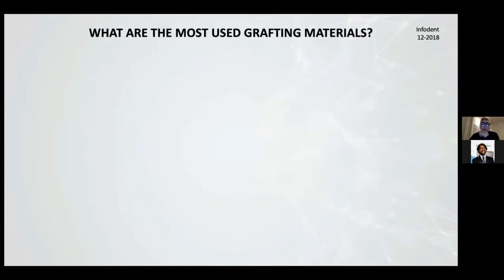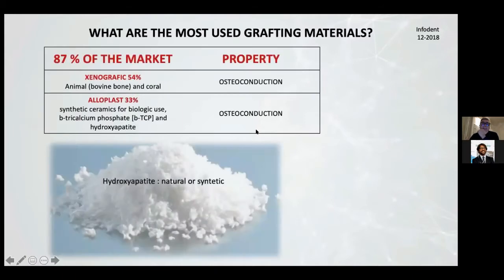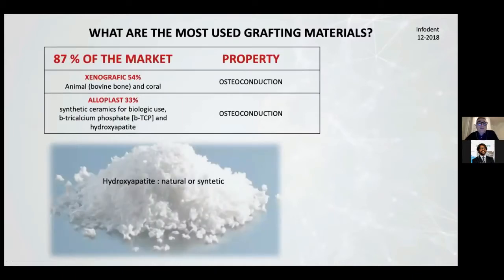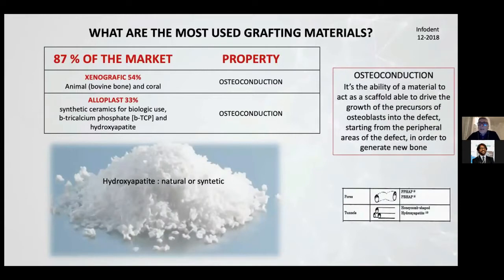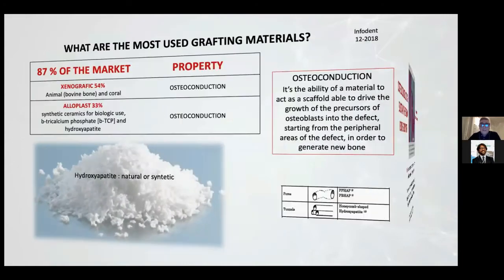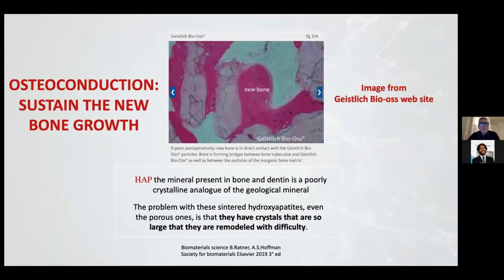The most used graft materials are xenograft and alloplast. They are 87% of the market and the only property is osteoconduction. What is osteoconduction? Osteoconduction is the ability to produce a scaffold where it's possible for the cells to start from the peripheral areas to the defect in order to generate new bone. This material is hydroxyapatite, natural or synthetic.